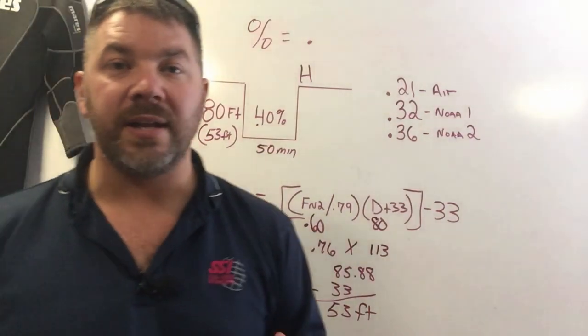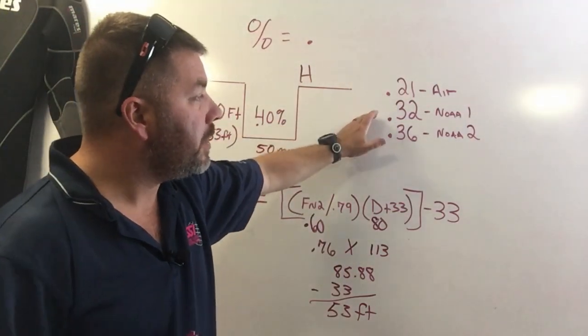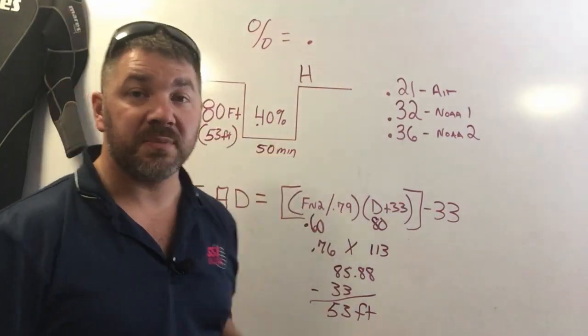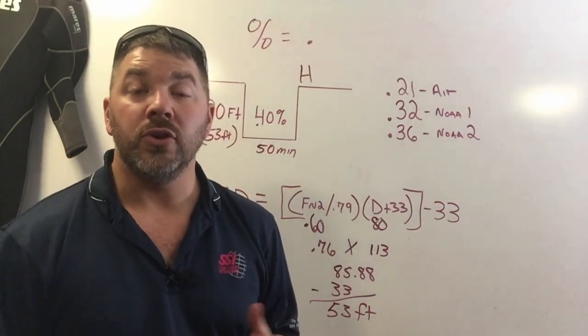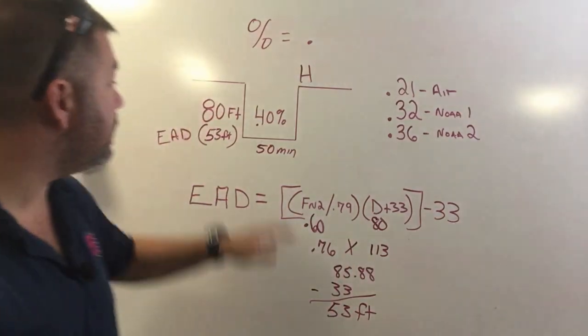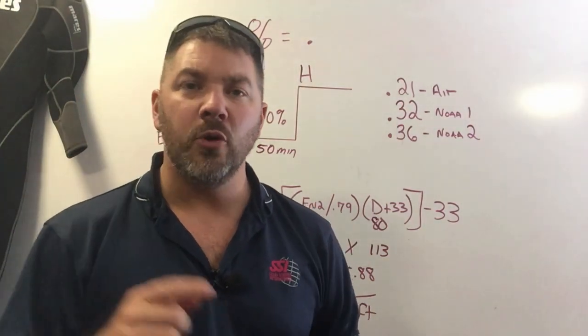Once again as a recap, the equivalent air depth is so that if you're using anything other than say 21 percent, 32 percent, or 36 percent and you don't have a table to factor that, of course you can use the equivalent air depth equation and go back to your standard air table and safely plan your dives.